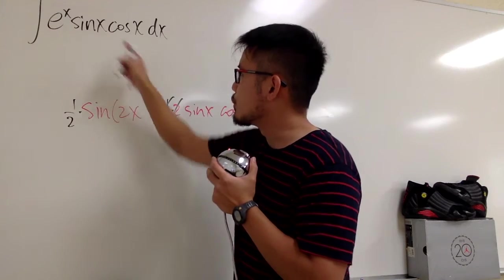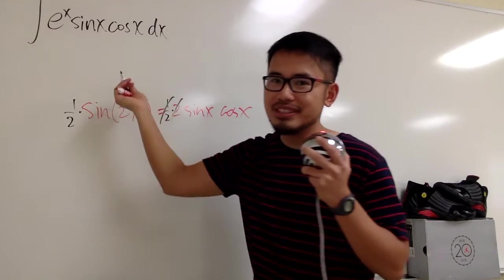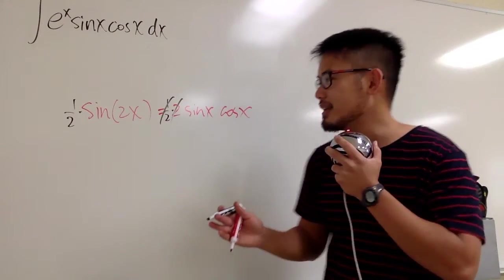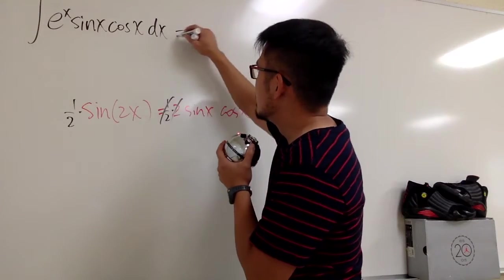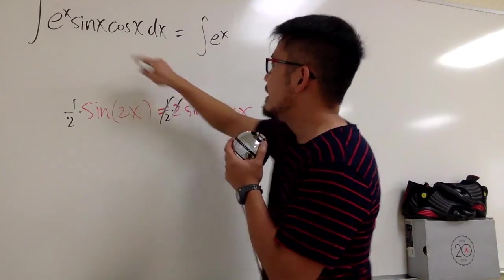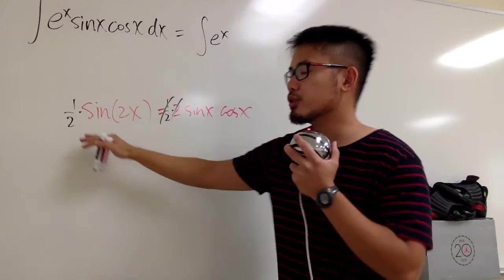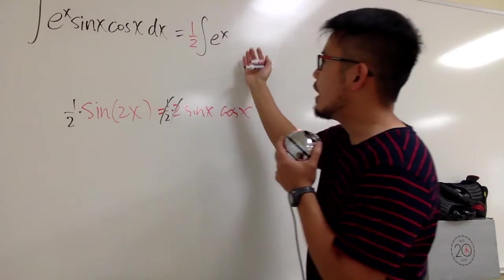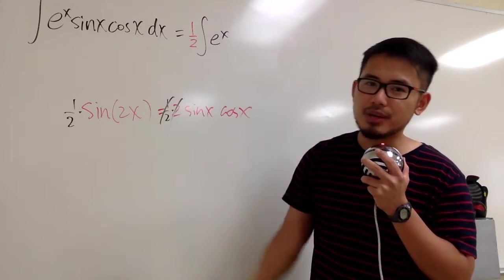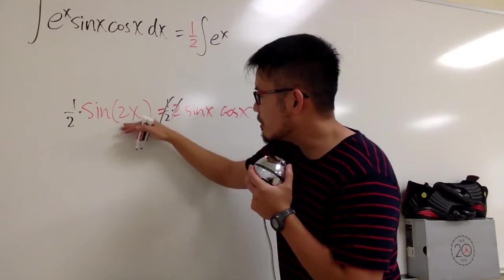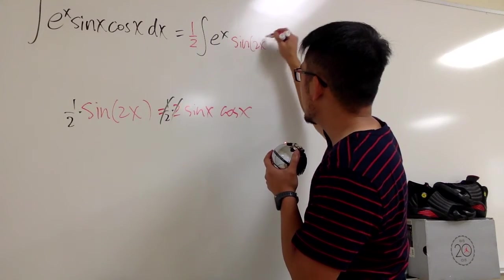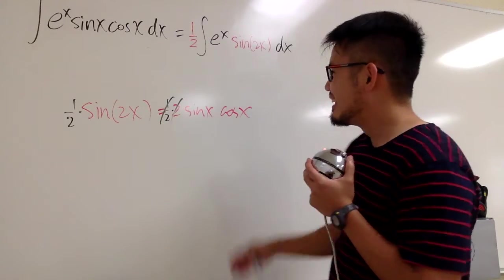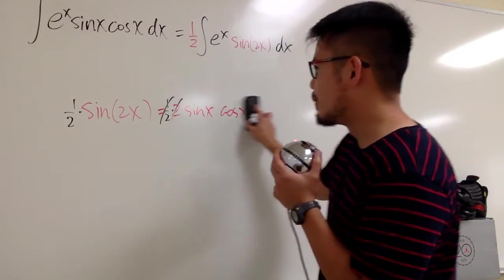We can replace sine x times cosine x with that identity, and we don't need to deal with the cosine factor anymore. So the integral becomes the integral of e to the x times 1 half sine of 2x dx. We pull the constant 1 half to the front of the integral. The sine of 2x has 2x inside. Thank you, double-angle formula for sine!